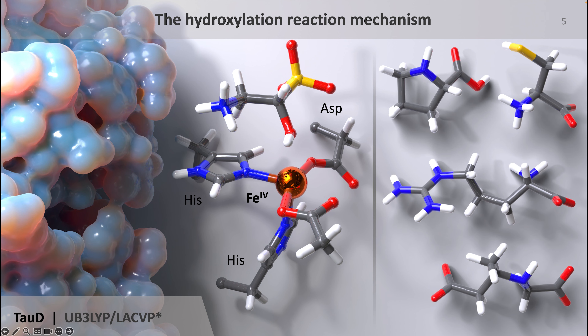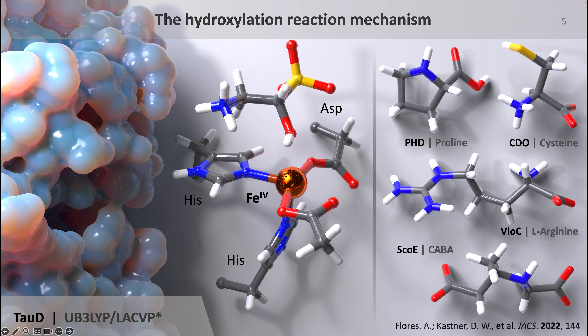For example, mutations in HIF-1-alpha, which hydroxylates proline, are strongly correlated to several of the most aggressive cancers, including pancreatic cancer. Mutations in CDO, which hydroxylates cysteine, have been linked to neural toxicity in diseases such as Alzheimer's disease and Parkinson's disease. VOC, which hydroxylates arginine, is used in the synthesis of vancomycin and is used to fight life-threatening bacterial infections. And lastly, SCOE, another enzyme I've personally worked on, uses a hydroxylation reaction to trigger nitrile formation, which is often described as a molecular warhead.